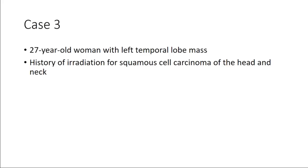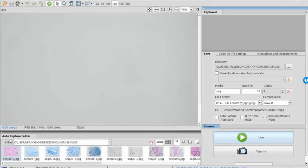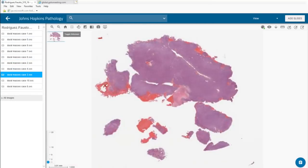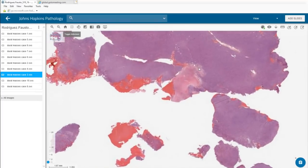Case 3 is a 27-year-old woman with a left temporal lobe mass and a particular history of irradiation for squamous cell carcinoma of the head and neck many years prior. This is Case 3 in the virtual slides.